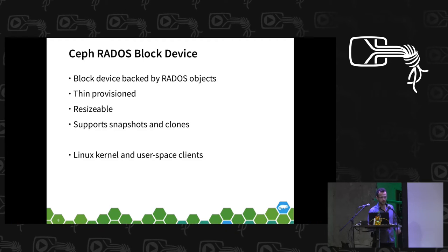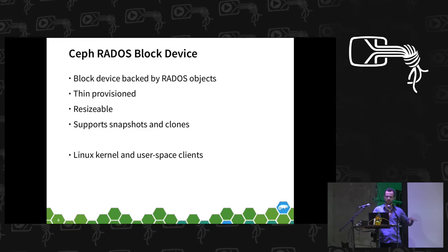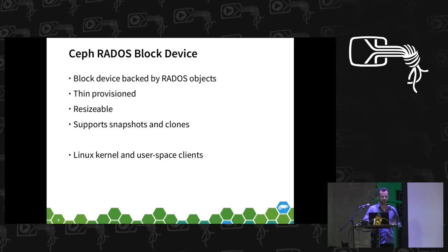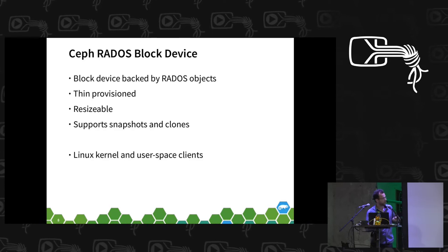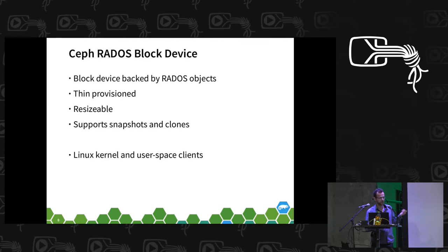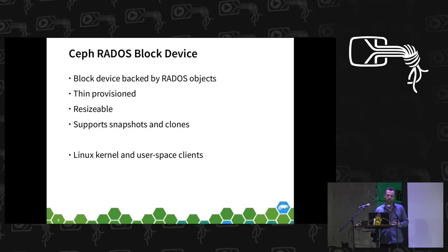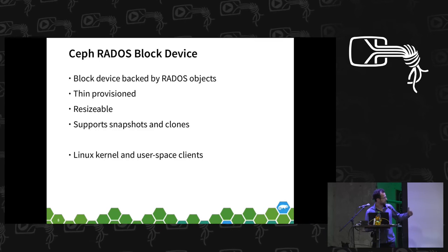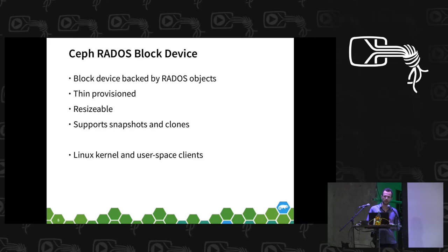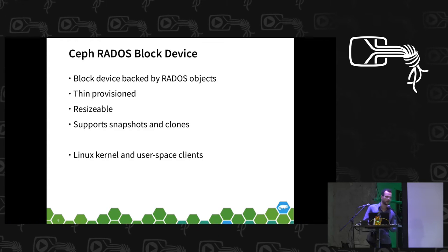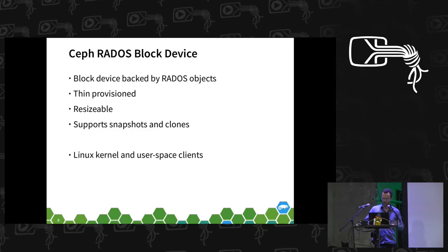A bit more on Rados block device, or RBD. We have a block device image which is stored across the Ceph cluster, so it inherits the reliability and scalability aspects of Ceph. It has a number of other neat features — they're thin provisioned, you can resize them online, grow and shrink, and they support snapshots and clones of those images. On the access side, from the Linux kernel we can locally map a Rados block device image that appears as a local device and use it like any other disk. There are user space clients as well for other applications.